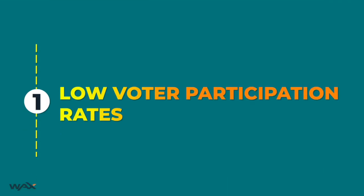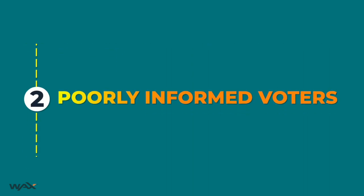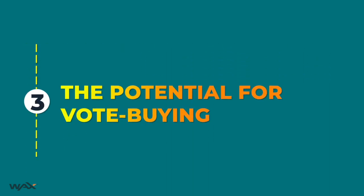There are some excellent advantages to using a voting delegation system like DPoS. It allows the blockchain to perform at a much faster speed, at a lower cost, and with much lower energy consumption. But how does your everyday token holder know which block producers to vote for? And why would the average token holder even care who does the validating, especially if they hold very few tokens? When we were designing the WAX blockchain, we spent a lot of time thinking about these questions. The three biggest pain points in delegated proof-of-stake voting are low voter participation rates, poorly informed voters, and the potential for vote buying.